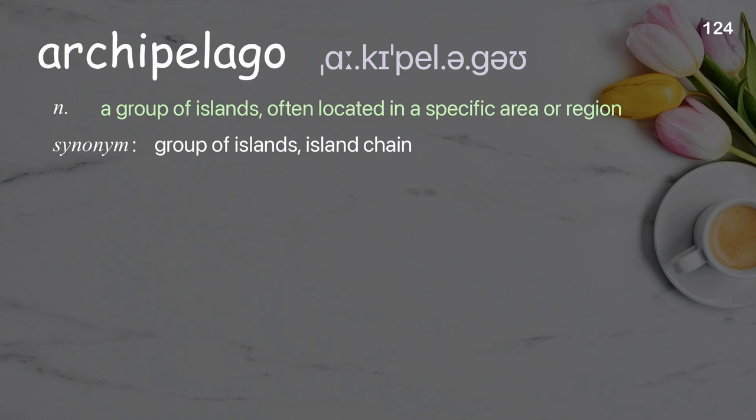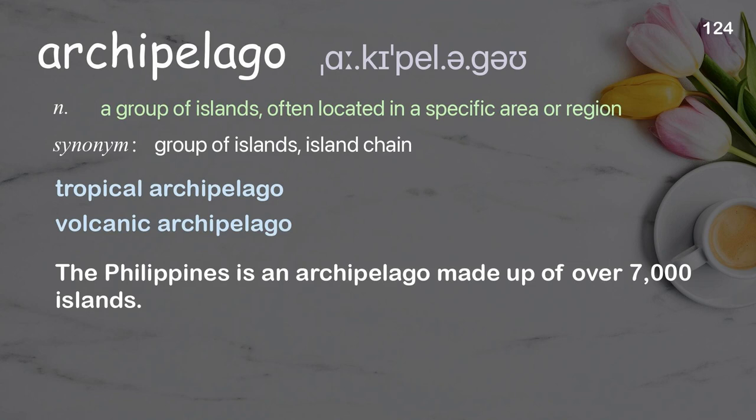Archipelago: a group of islands, often located in a specific area or region. Examples: Tropical archipelago. Volcanic archipelago. The Philippines is an archipelago made up of over 7,000 islands.